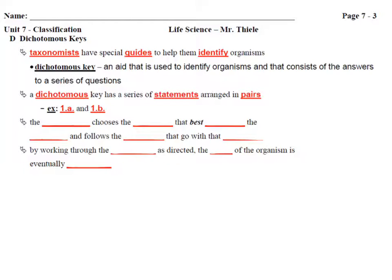As a scientist is studying an organism and trying to figure out what it is or classify it, they go through the dichotomous key and look at the paired statements to determine which statement best describes the organism. The investigator chooses the statement that best describes the organism and follows the directions that go with that statement. Each statement will direct you to another statement or identify the organism for you.